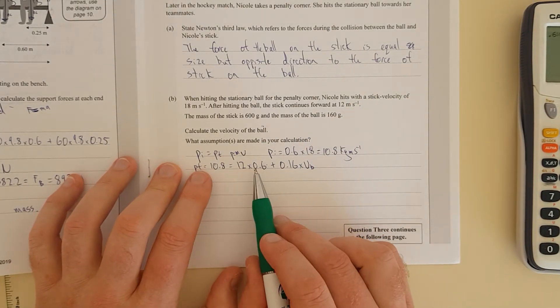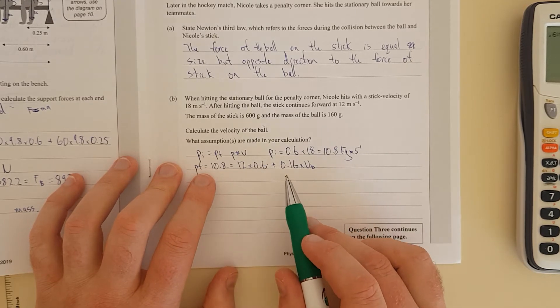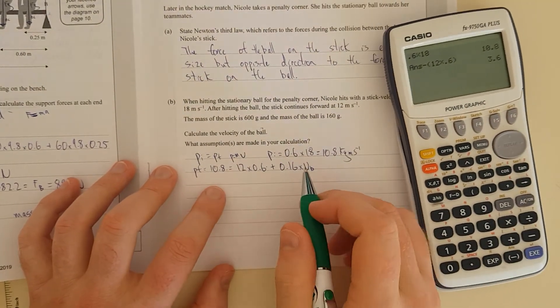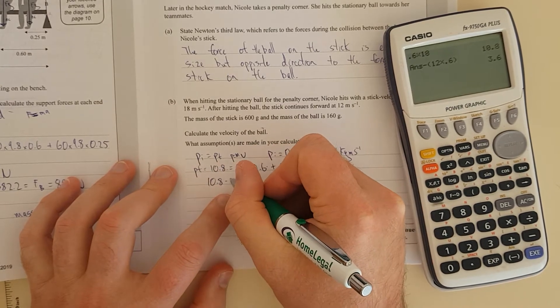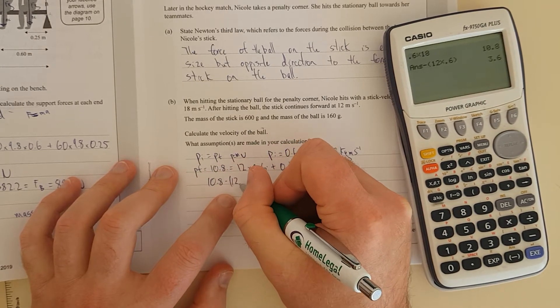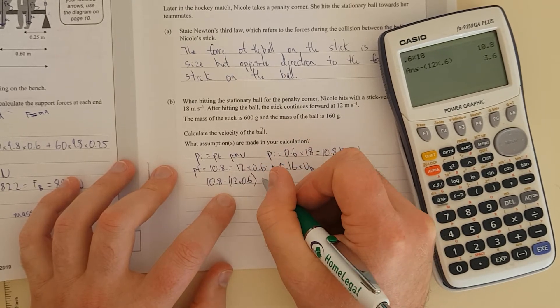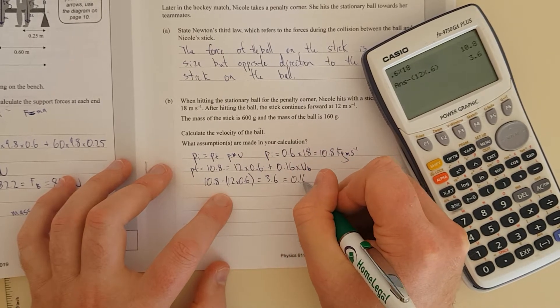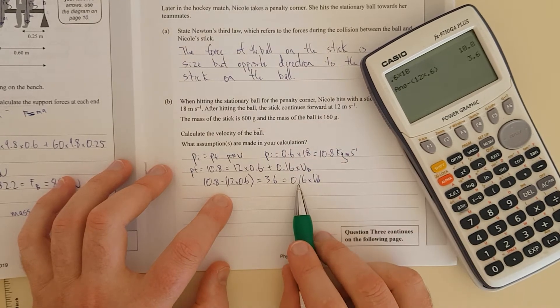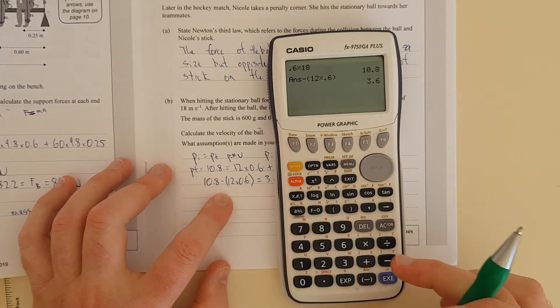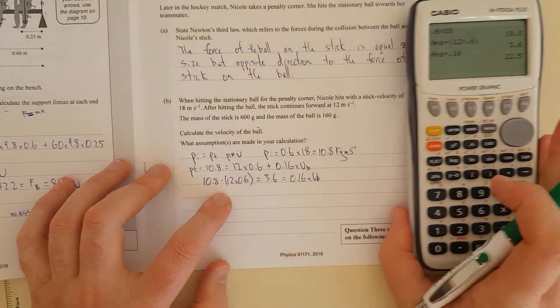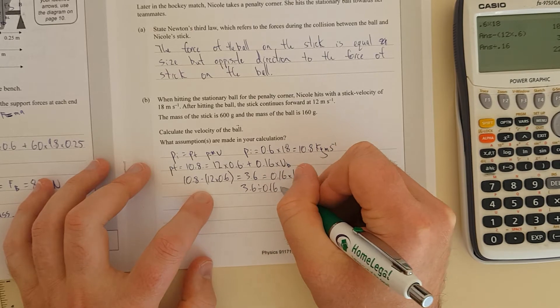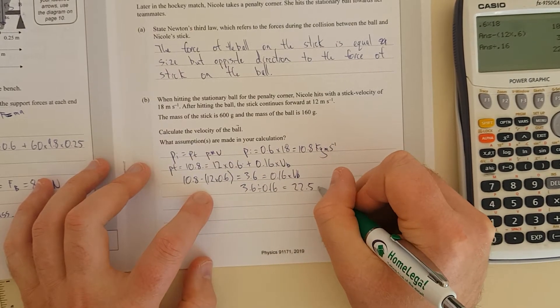Right, so now I'm going to add this together, subtract both sides by this number here, and then I'll get left with 3.6 kg meters per second. So we have 10.8 minus 12 times 0.6, and that equals 3.6 kg meters per second. And that equals 0.16 times VB. And then you can see I'm going to divide both sides 3.6 divided by 0.16, 22.5 meters per second.